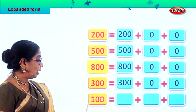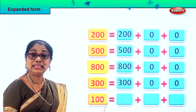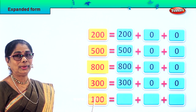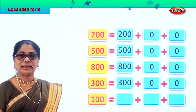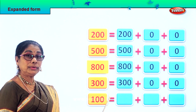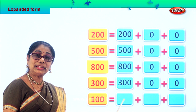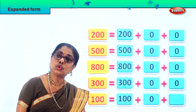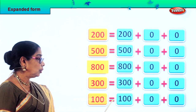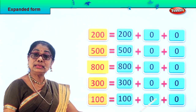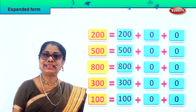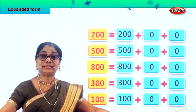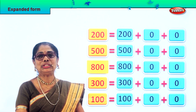Next we have one hundred — zero in the ones place, zero in the tens place, one in the hundreds place. So we are going to expand one hundred now. One hundred is equal to one hundred plus zero ten plus zero one. So one hundred is equal to one hundred plus zero plus zero. Now you know how to expand numbers. I hope you enjoyed it!